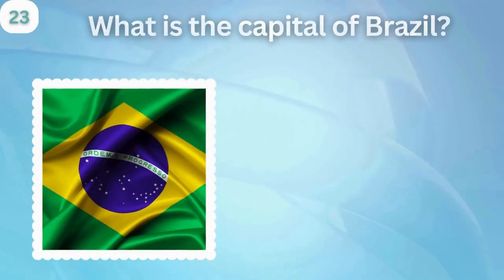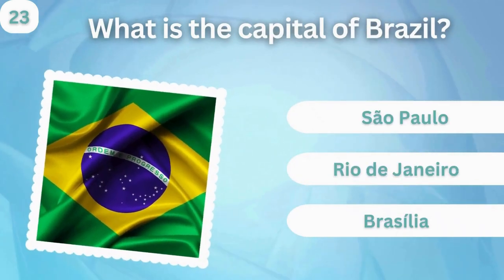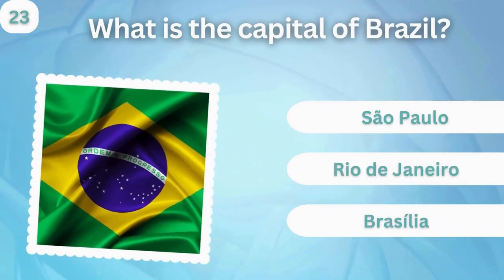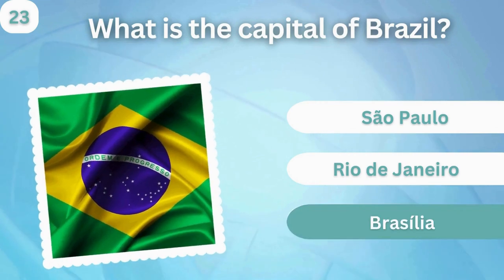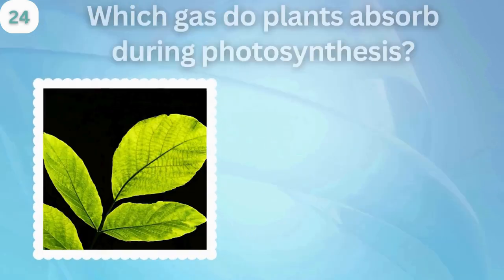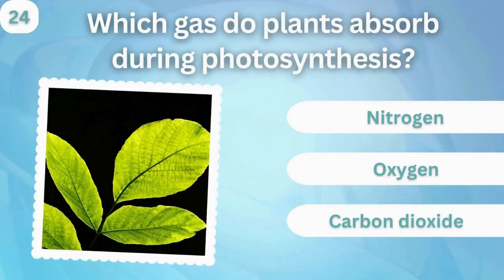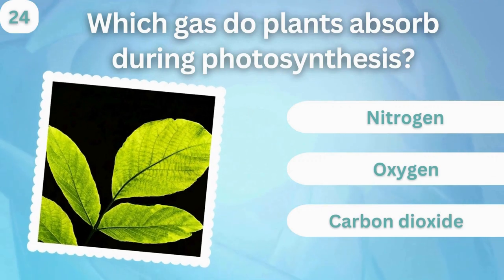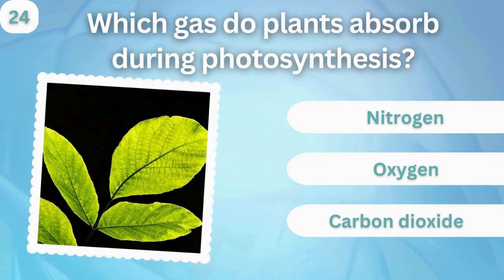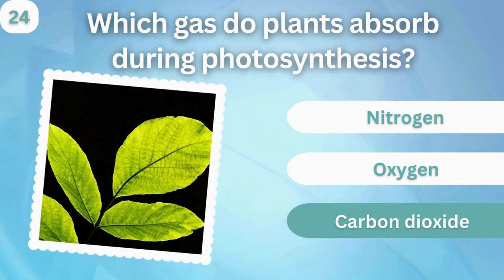What is the capital of Brazil? São Paulo, Rio de Janeiro, or Brasilia? Brasilia. Which gas do plants absorb during photosynthesis? Nitrogen, oxygen, or carbon dioxide? Carbon dioxide.